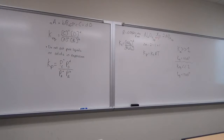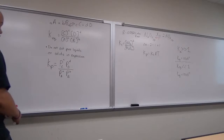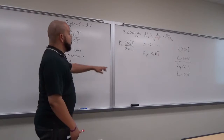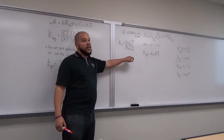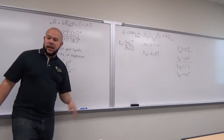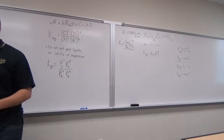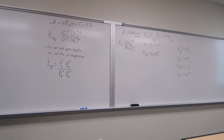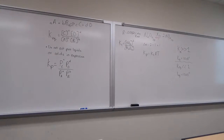Someone might ask: how is it that there are no units when the expression has squared terms and first-power terms? There's some algebra that can prove why we don't have units, but we won't get into that.